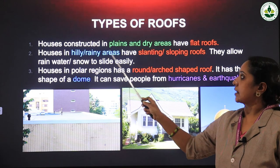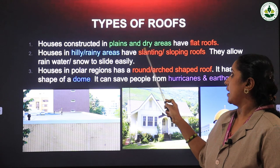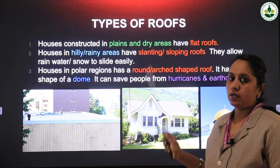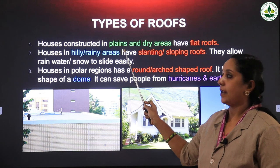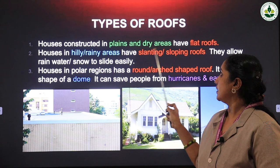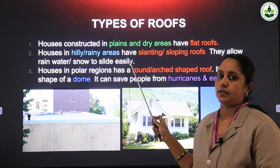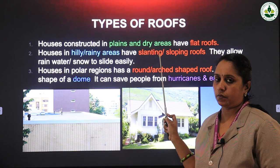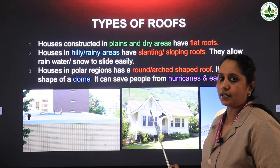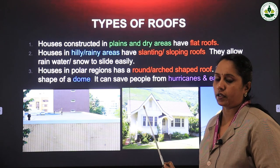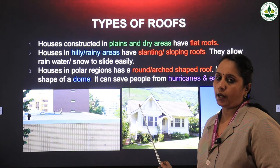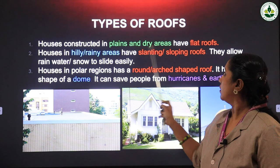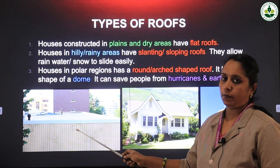Houses constructed in plains and dry areas have flat roofs. Those houses in normal places have flat roofs. In Kerala, we normally have flat roofs, though some houses have slanting roofs depending on the type of construction and plan.